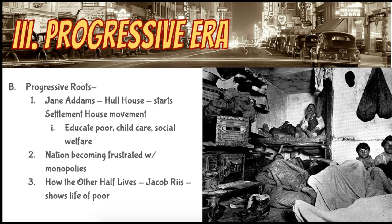For a lot of people like Jane Addams, she had become really disillusioned with what America had become. She looked around and saw things like monopolies and saw them as corrupting society. And so she really wanted to try to clean things up.